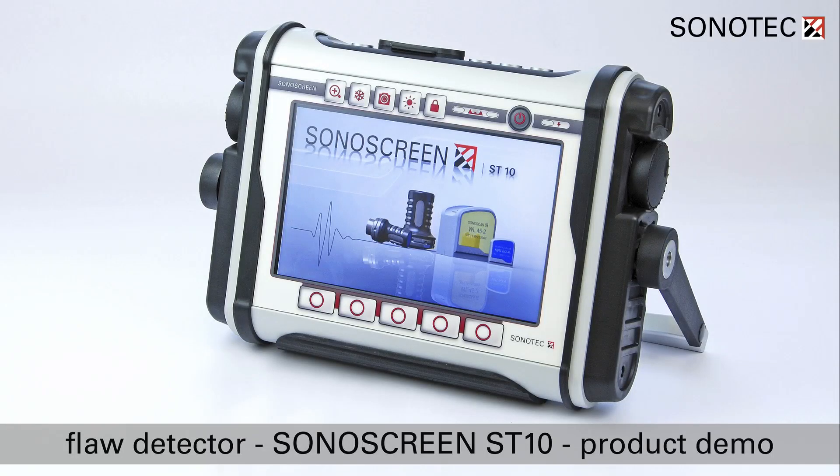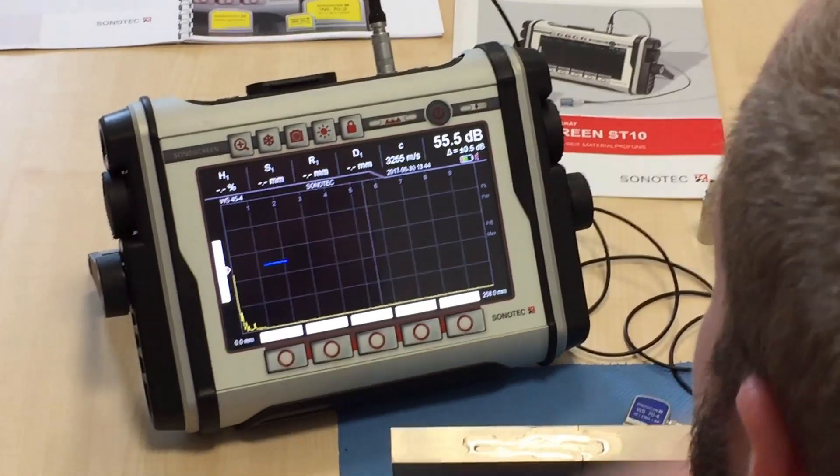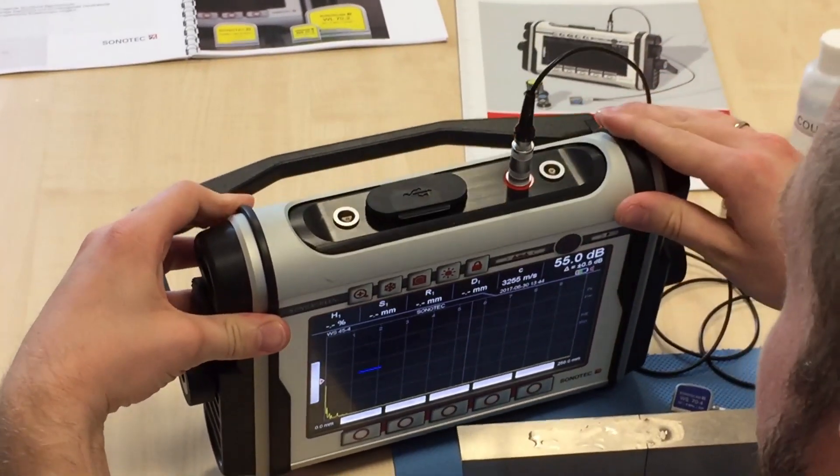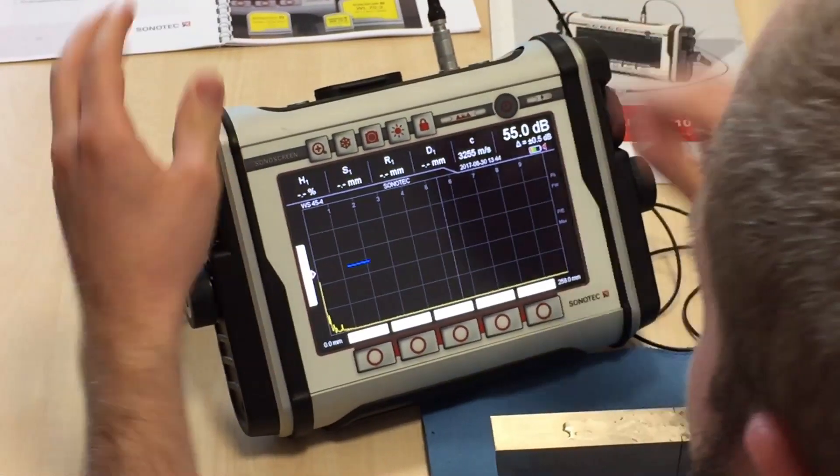Welcome to the product presentation of the Sonoscreen ST10 Flaw Detector. The Sonoscreen ST10 has a very robust aluminum housing and is IP66 protected against water and dust.